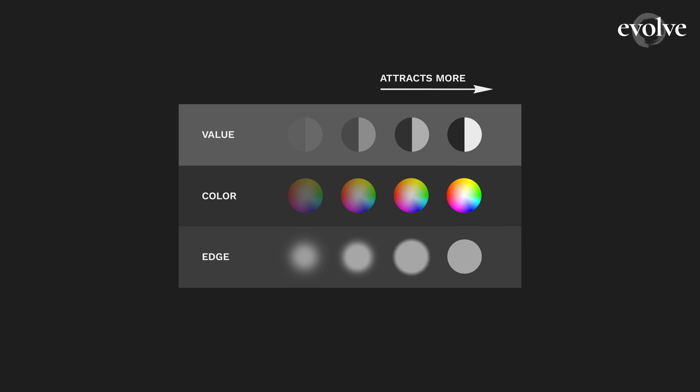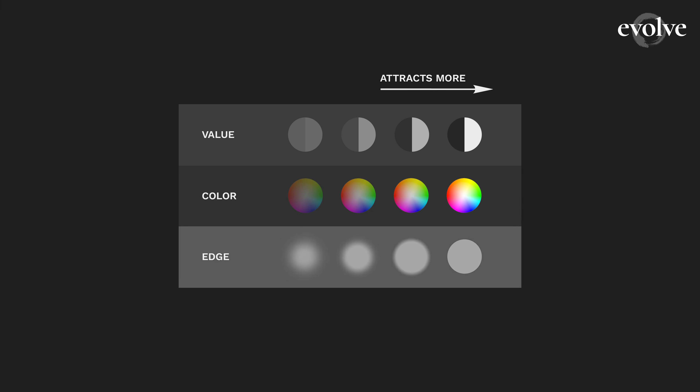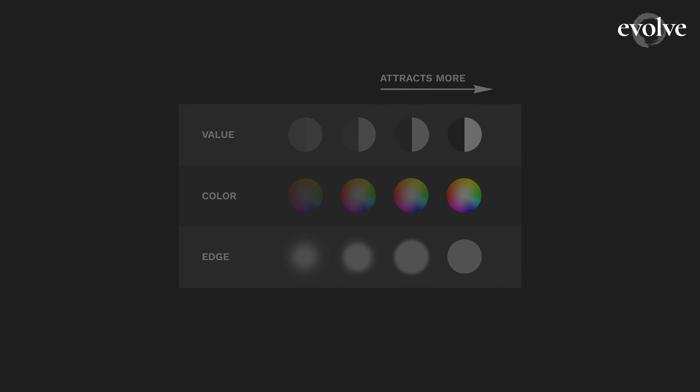For values, our eyes are drawn to high contrast. For color, our eyes are drawn to high contrast in color as well, but also saturation. And for edges, our eyes are drawn to sharp transitions in value or color — that is, sharp detail, things in focus, things like that.